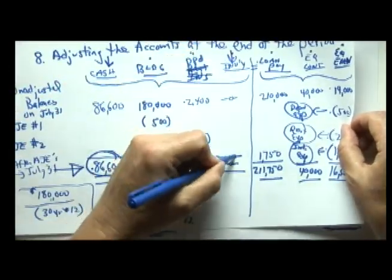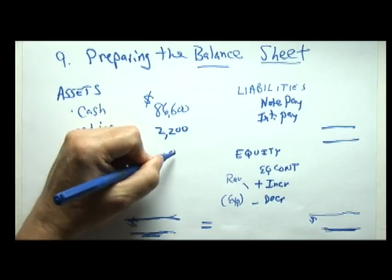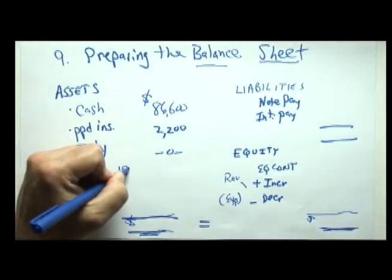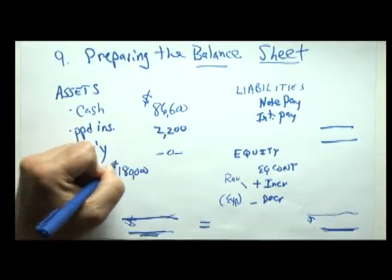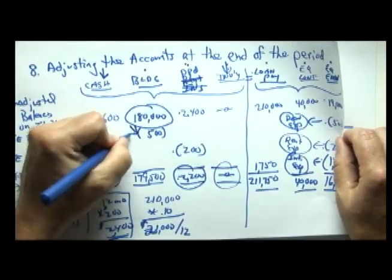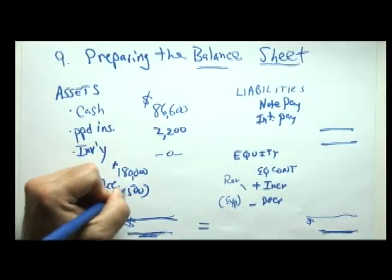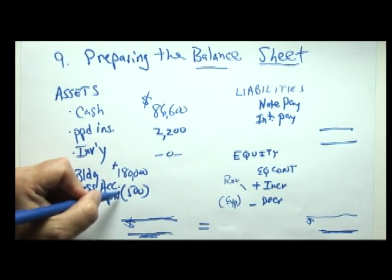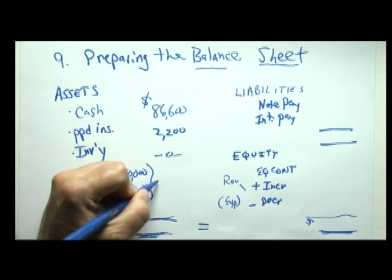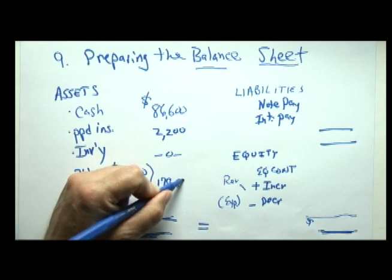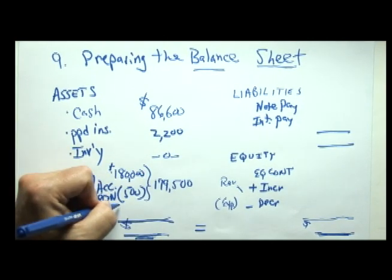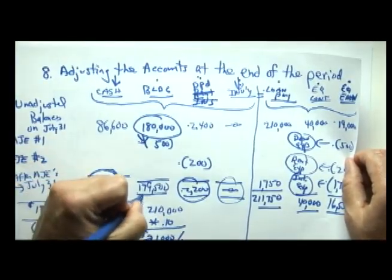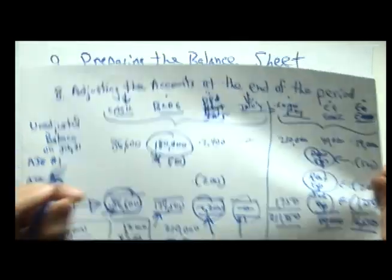Our inventory is zero, so we put zero here. The building cost one hundred eighty thousand, and then we subtract the amount we depreciated this month. Whenever you take a long-term asset's cost and subtract its total depreciation to date, we report that number on the balance sheet at its book value — that's an accounting term meaning cost less depreciation to date. We've simply transferred our ending numbers from the database to the left-hand side of the balance sheet.